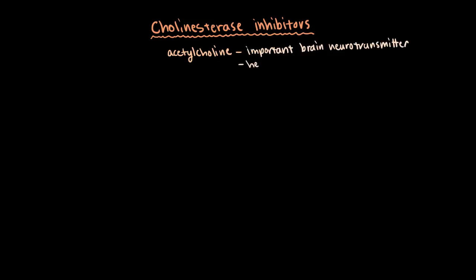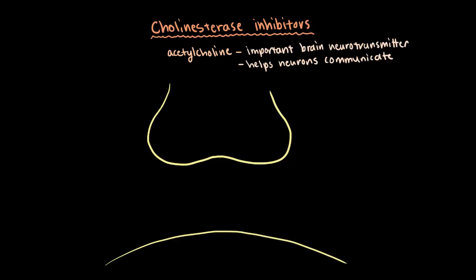The first class of drugs are cholinesterase inhibitors. Acetylcholine is a really important neurotransmitter in our brain and nervous system. In our brain it helps our neurons communicate, and it's this communication that allows our brain to think and do things like sustain attention, sense things, learn and remember things.